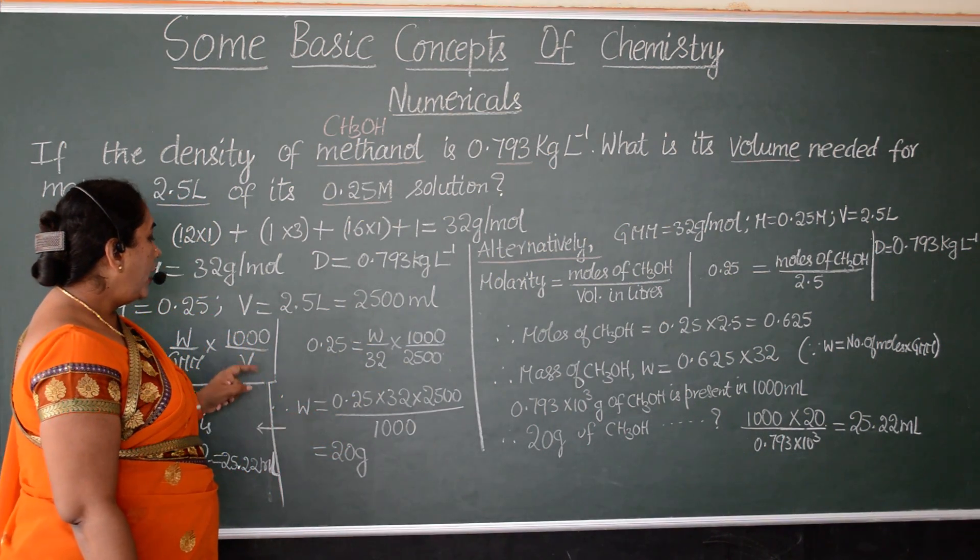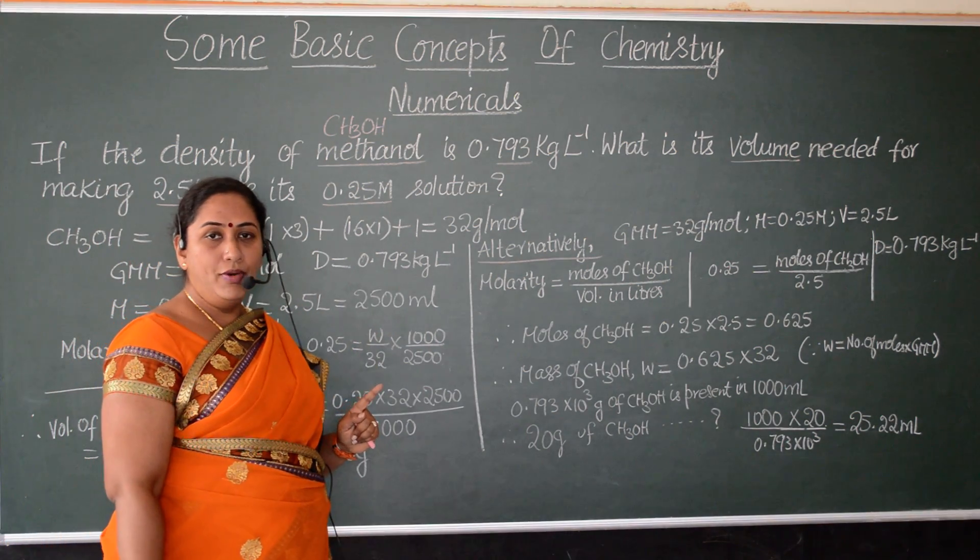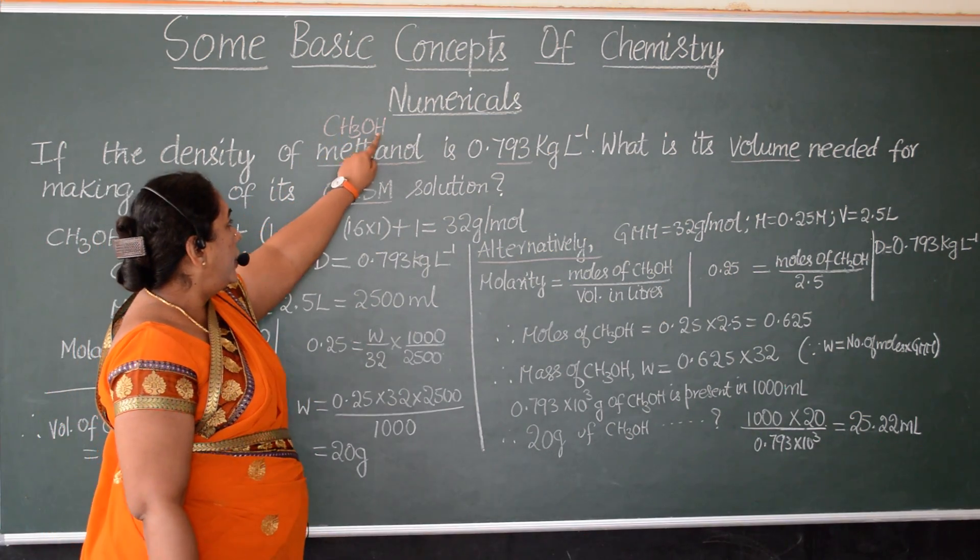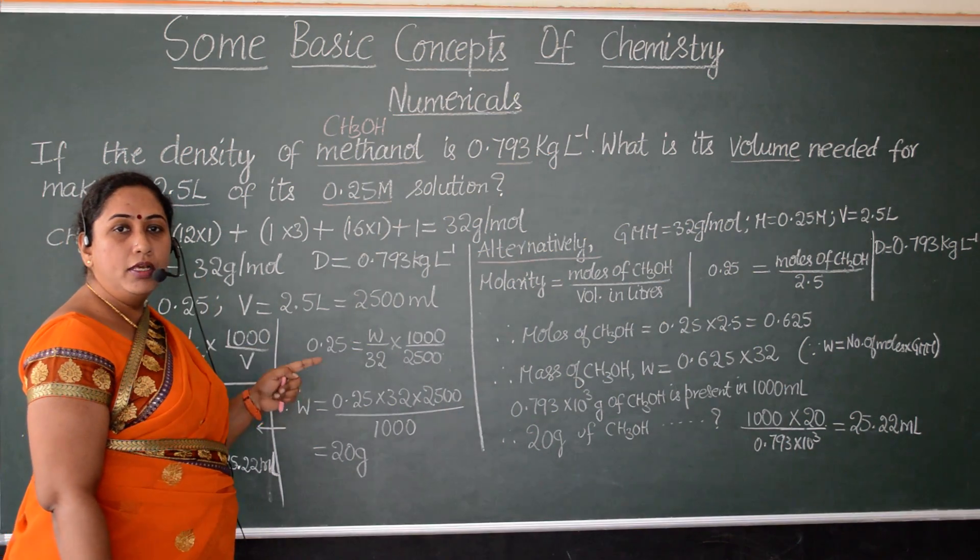So, to find out the mass, first let us write all the data given to us. Methanol formula CH3OH. First, let us calculate its gram molecular mass.